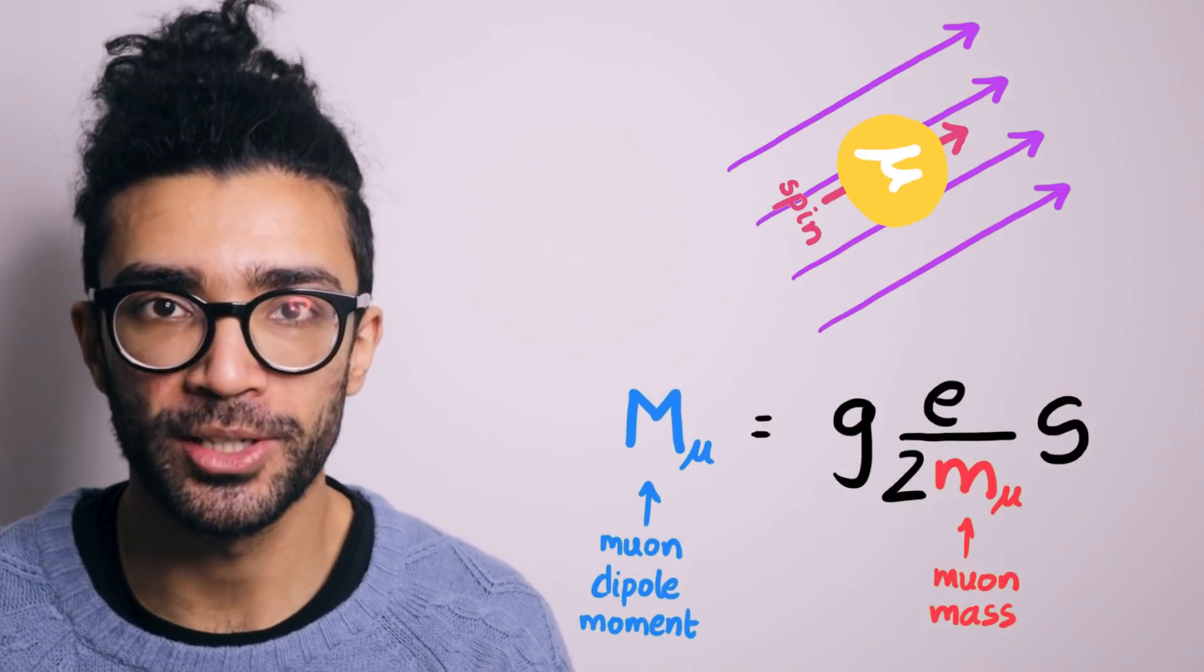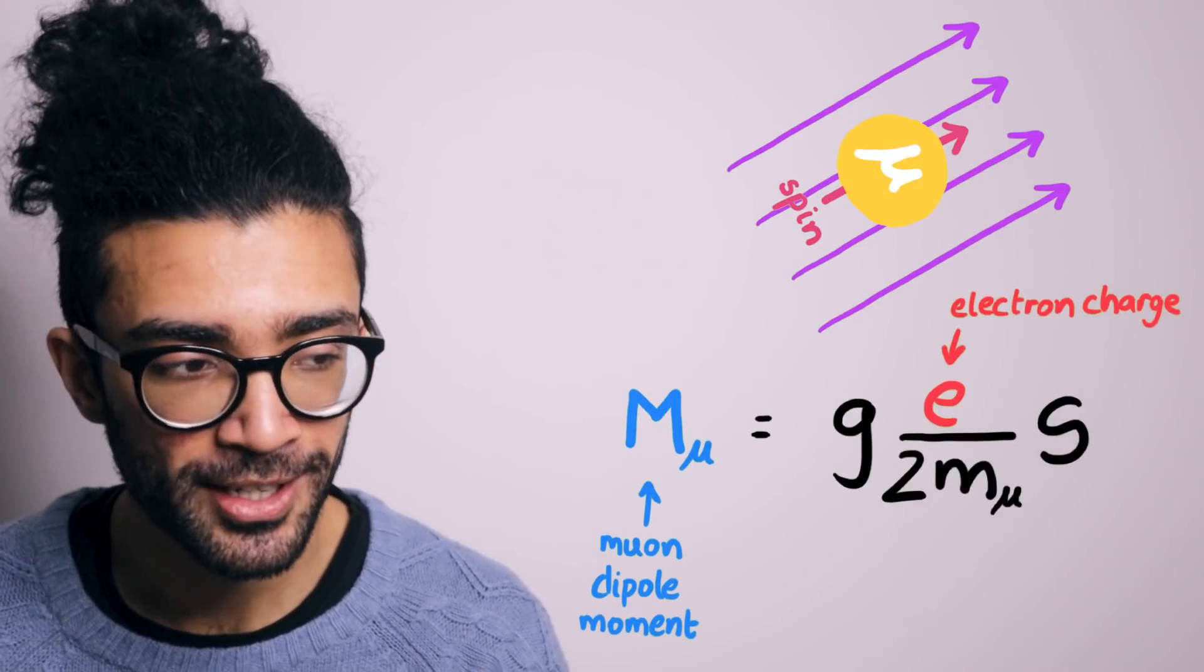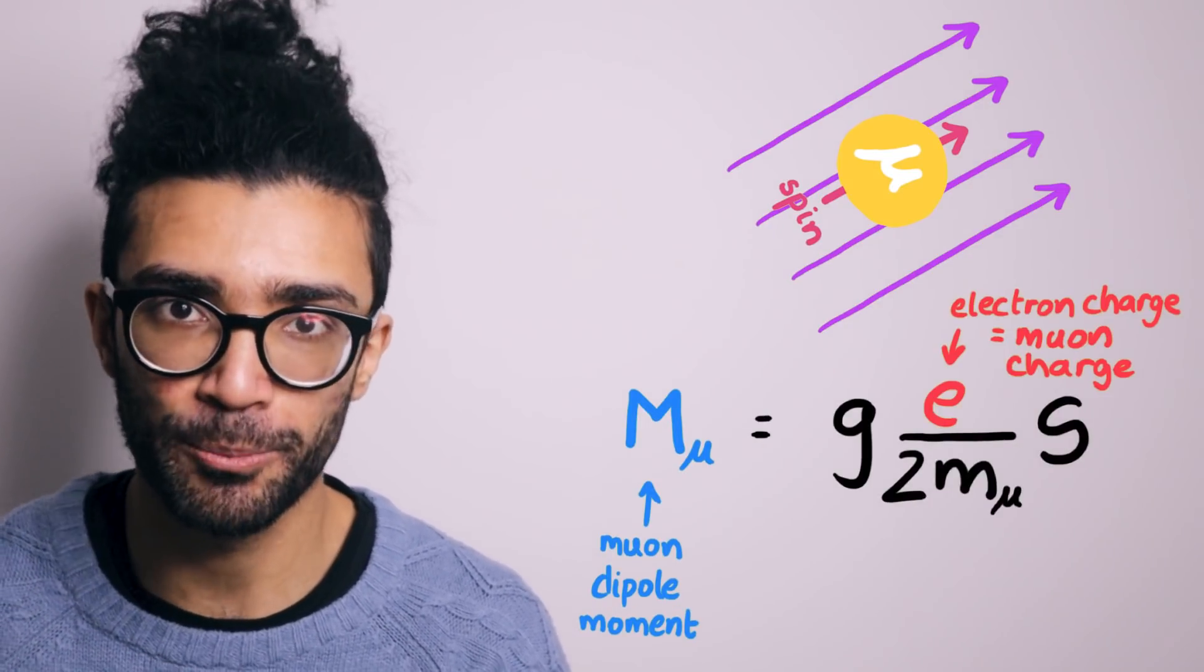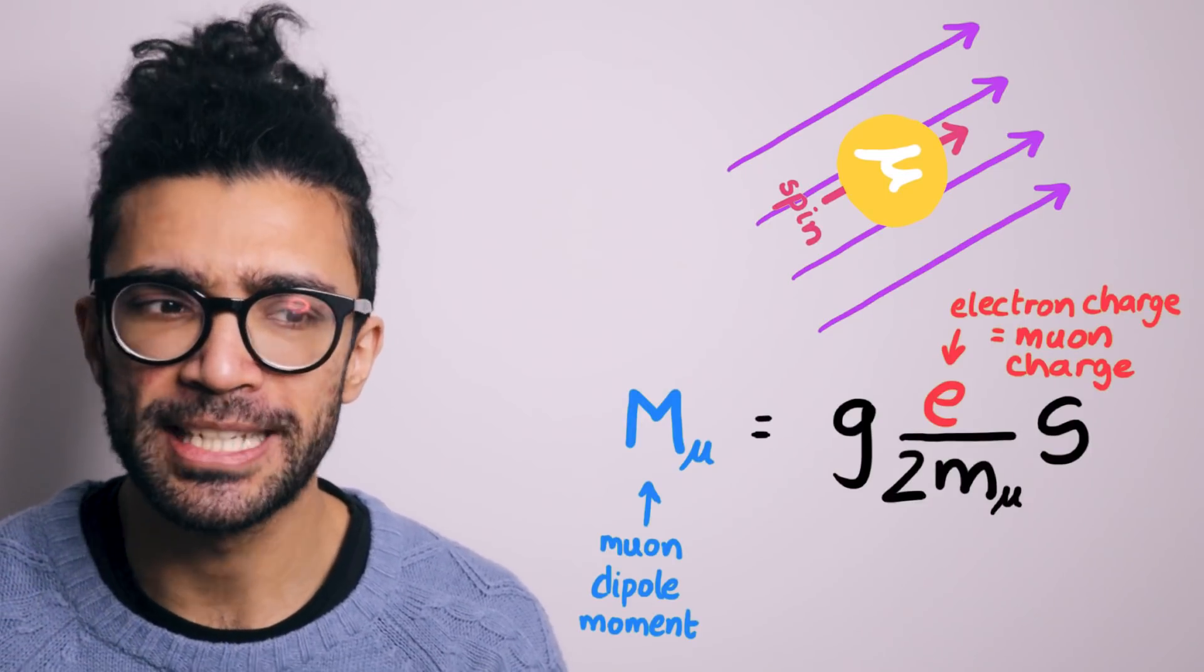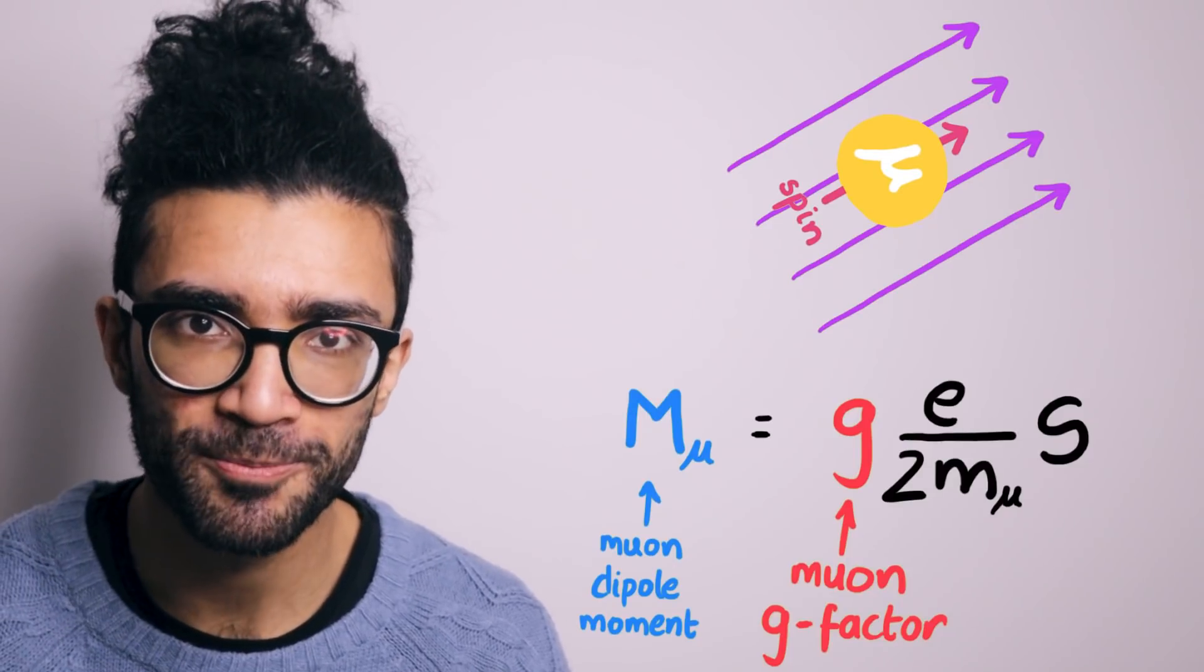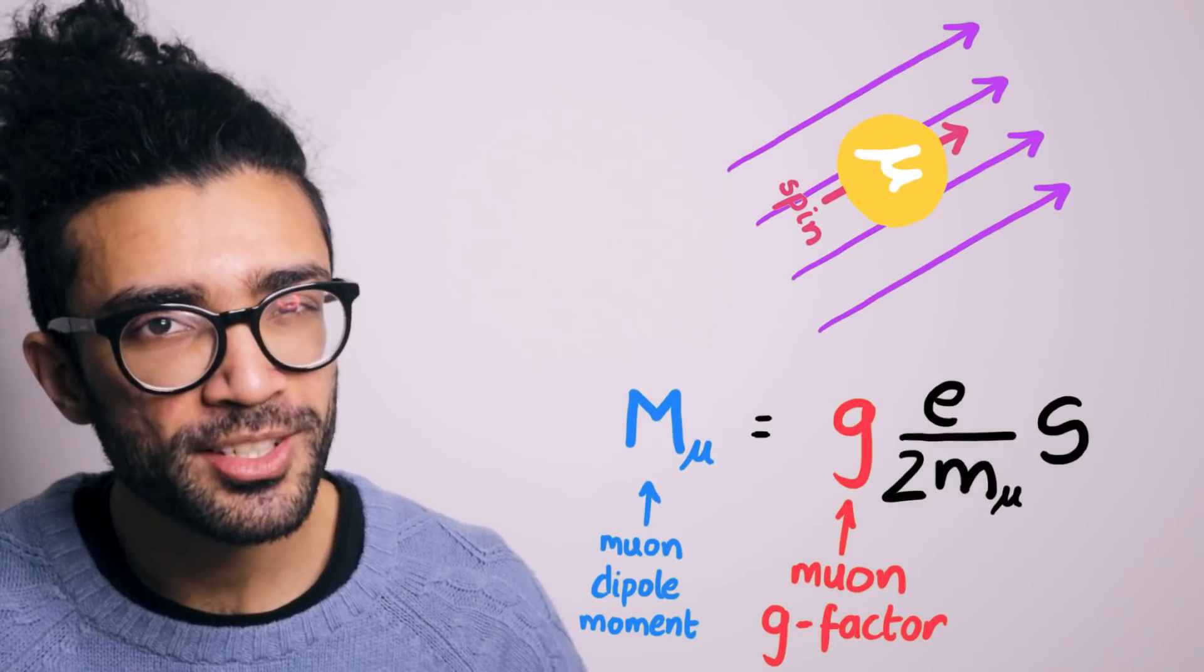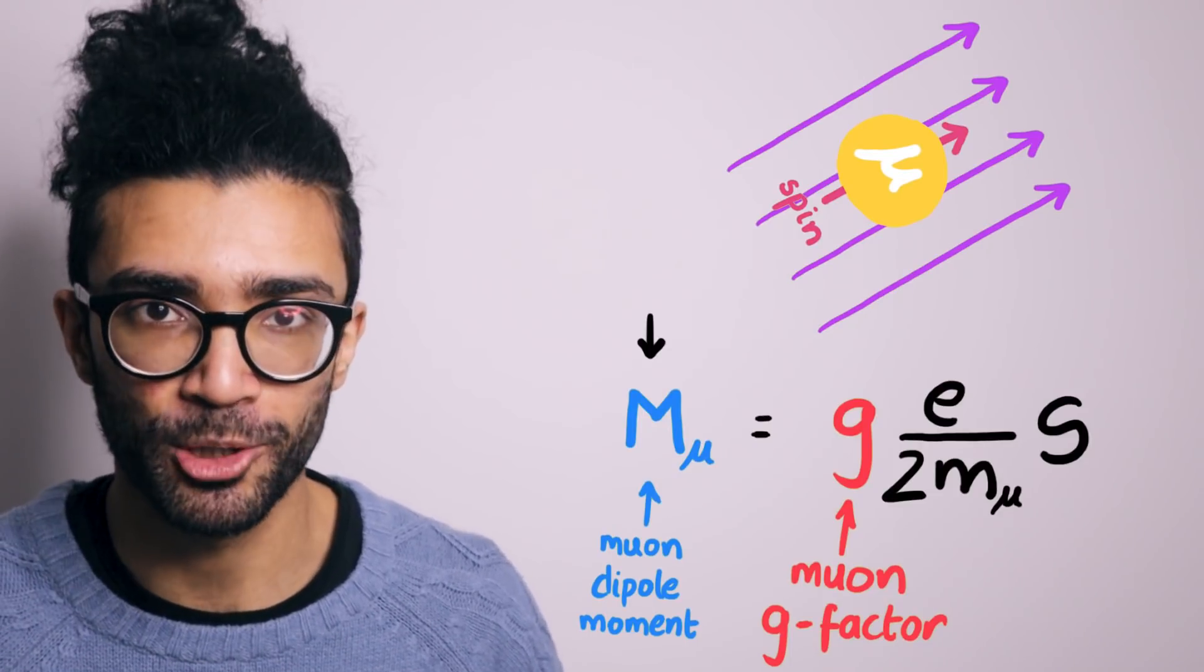Specifically, we see the mass of the muon here in the denominator. And we also see the charge of the electron, which again happens to be the same as the charge of the muon. And hence, that's why we find it in this equation. But the most interesting quantity is this one here. It's known as the g factor of the muon.